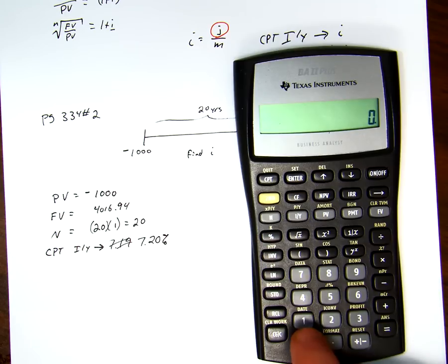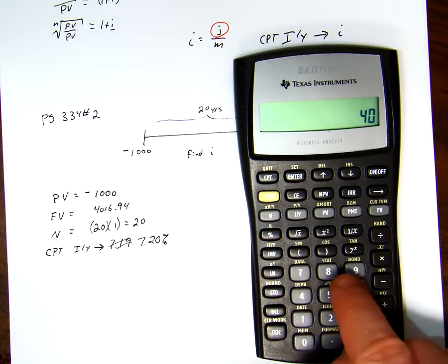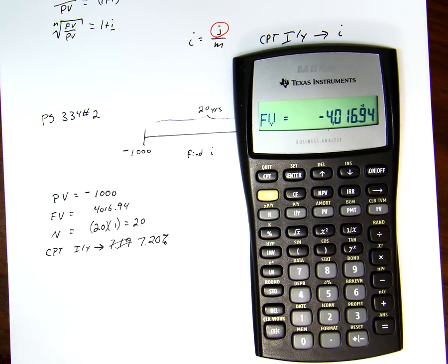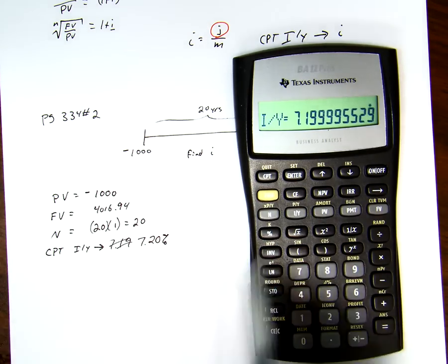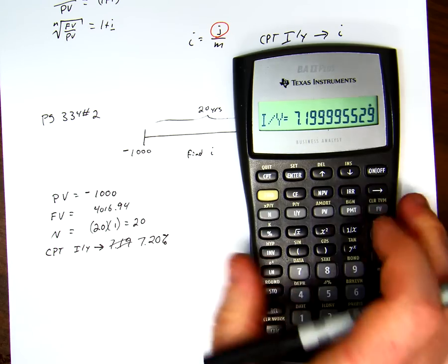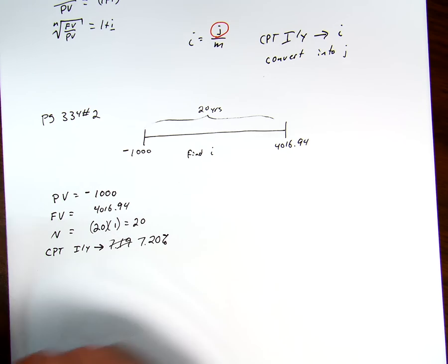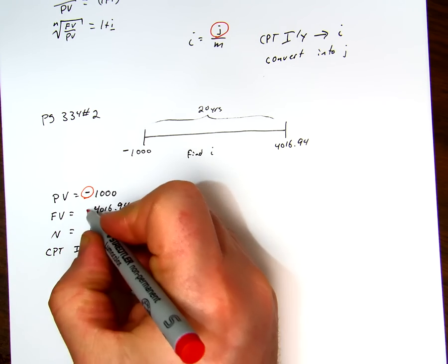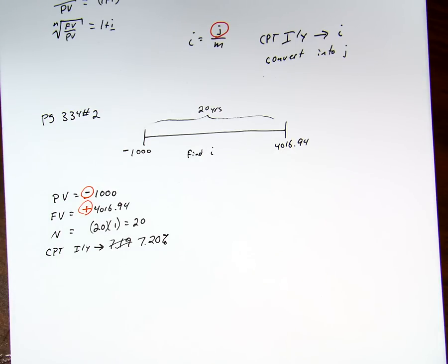Just checking the other way, if we said this is $1,000 as a present value, and $4,016.94 negative as a future value, and compute i per y, we get exactly the same value. So for right now, it doesn't matter whether this is negative and this is positive. What matters is that they are opposites. So if we have a negative there, we have a positive there.